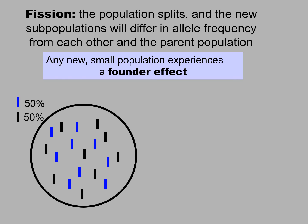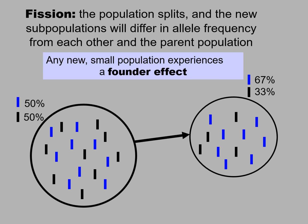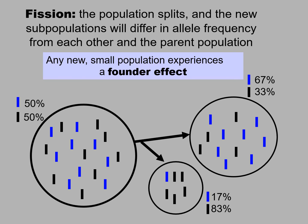Let's take an example. Here is a large population looking at simply two alleles — half are blue, half are black. If this population were to split into two different sized groups, you can see that the smallest group immediately has a hugely different gene pool. Instead of 50-50, it's now 17-83. But the other, slightly larger new population also differs: 67-33.